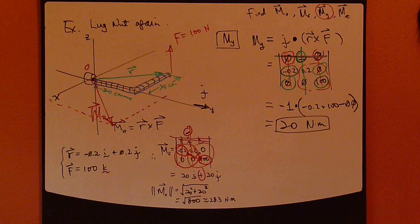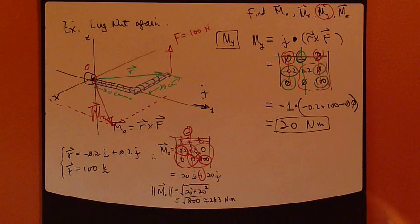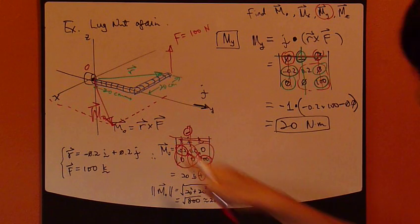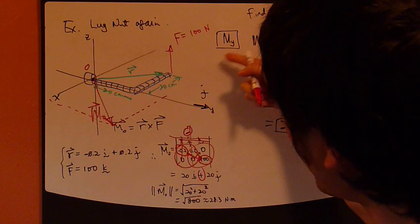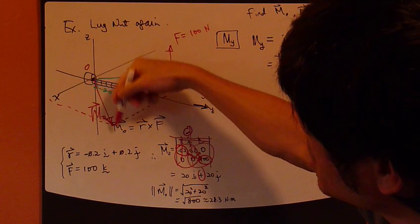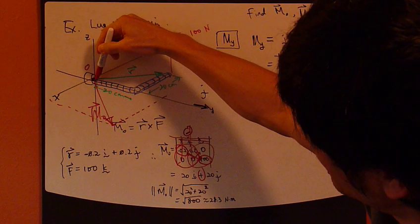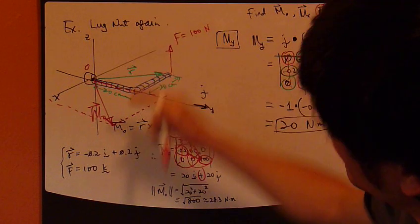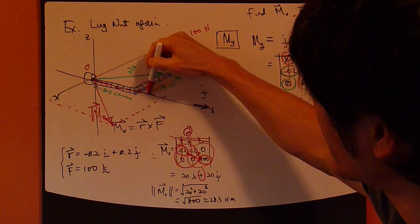So, that's 20 newton meters. Okay? So, this gives you the magnitude of m_y, that's exactly 20. Okay? And, look at this. It makes perfect sense. M_y is the y-component of m-naught. Alright? So, if you take the y-component of m-naught, take the projection of m-naught onto the y-axis.